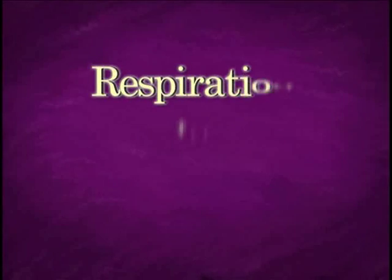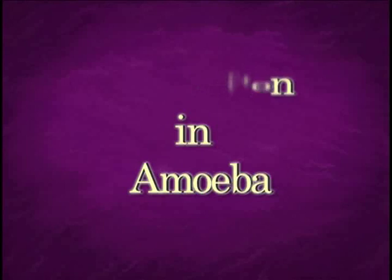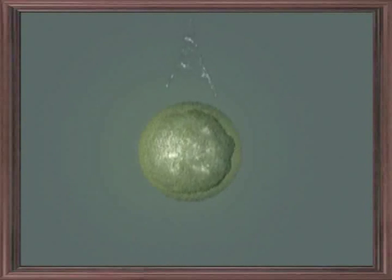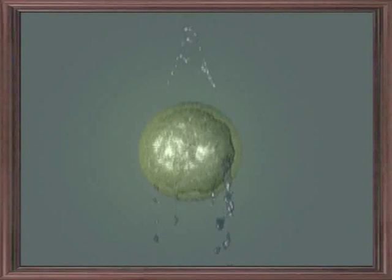Let us now examine different respiratory organs in animals. Why don't we look at amoeba as a unicellular example? Amoeba is a unicellular animal that lives in water. The cell membrane acts as a respiratory structure. Amoeba obtains oxygen and removes carbon dioxide through the cell membrane by diffusion.